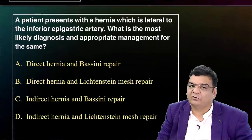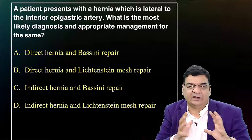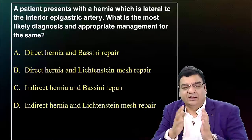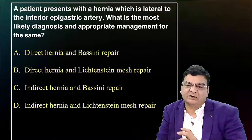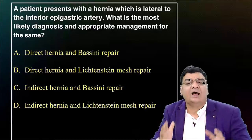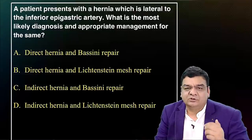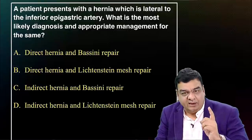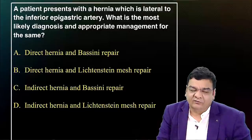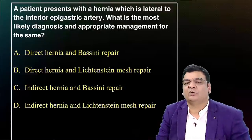Also remember the incisions used for appendicectomy. For hernias, they may ask about pathogenesis or the basic difference between indirect and direct hernias. Indirect hernias are lateral to inferior epigastric vessels through the deep inguinal ring. Direct hernias are medial to inferior epigastric vessels through Hesselbach's triangle. Treatment for both is tension-free polypropylene mesh hernioplasty — Lichtenstein operation. The NYHUS classification: type 1–2 indirect, 3A direct, 3B both, 3C femoral, 4 recurrent. There may also be a question on managing a strangulated hernia in emergency.